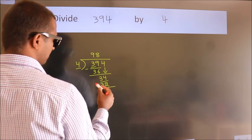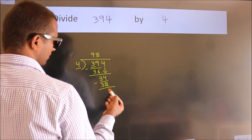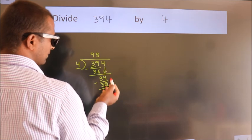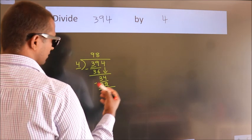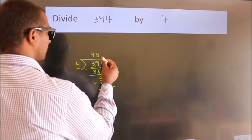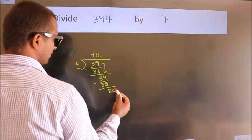Now we subtract. We get 2. After this, no more numbers to bring down, so what we do is put a dot and take 0. So 20.